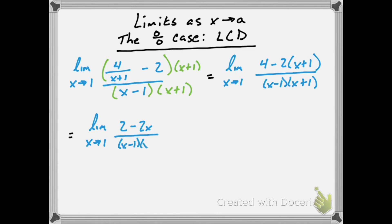We can factor out a negative 2 in the numerator, leaving us with negative 2 times x minus 1. Now we have common factors of x minus 1. Let's cancel those out.